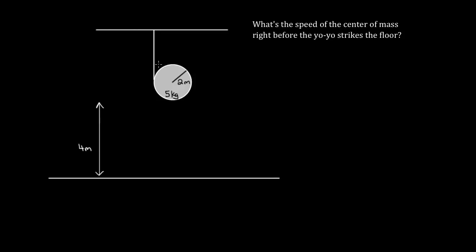You might think this thing isn't rolling at all, but it's still the same idea. Just imagine the string is the ground — it's as if you have a wheel rolling on the ground without slipping, except the ground is the string. The cylinder is not slipping with respect to the string, so we can use our derivation: the speed of the center of mass equals the radius times the angular speed. But this alone doesn't let us solve, because we don't know the speed of the center of mass or the angular velocity. We need another equation — conservation of energy.